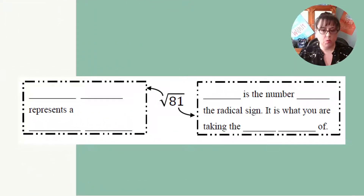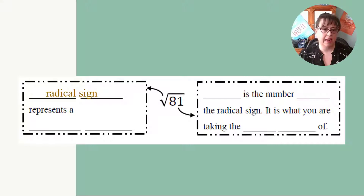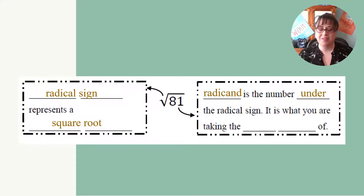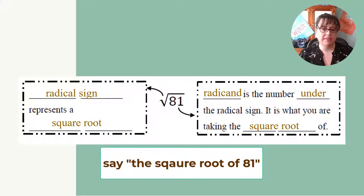Let's examine what a square root number looks like right now. The symbol on the outside is called a radical sign and it represents the square root. The number on the inside is called the radicand — it is the number under the radical sign and it's what you're taking the square root of. We read this as the square root of 81.